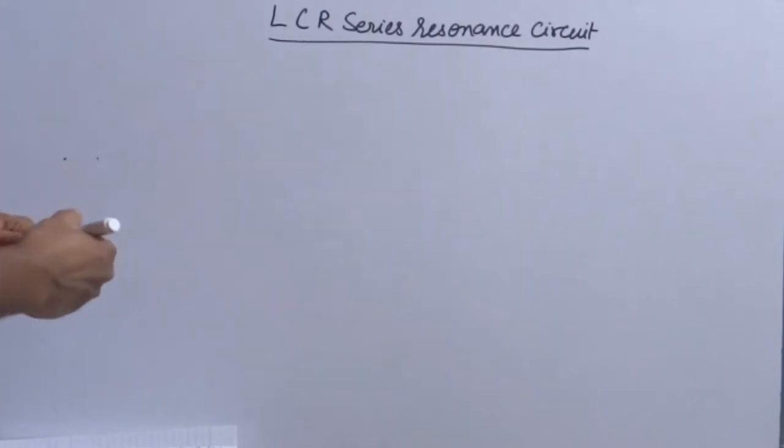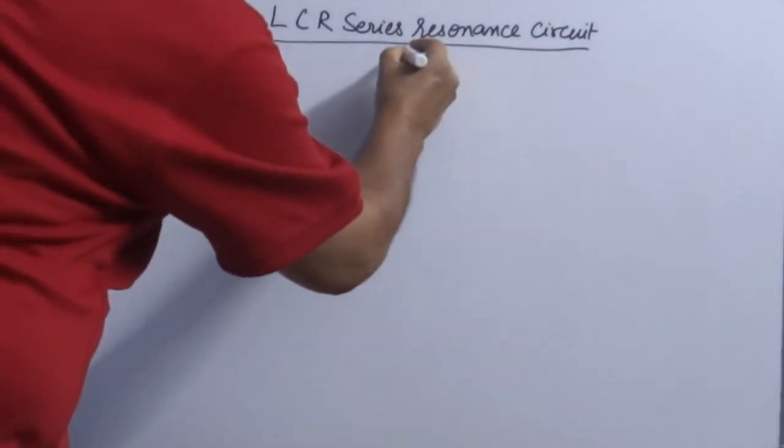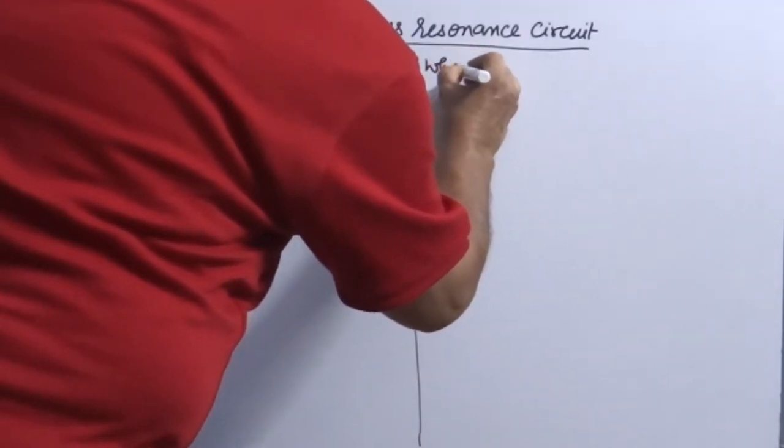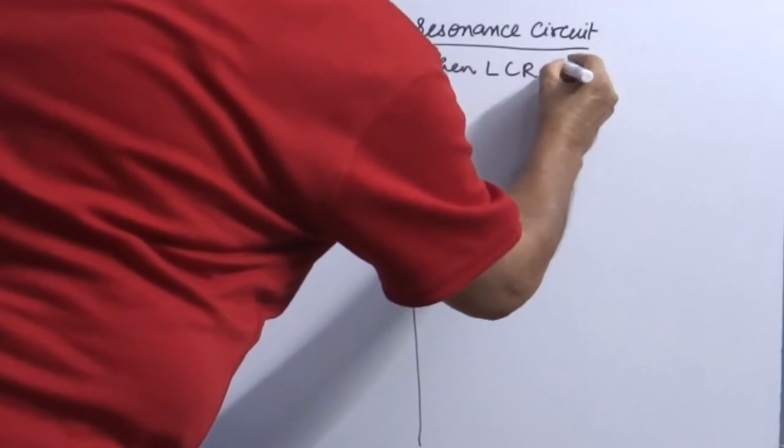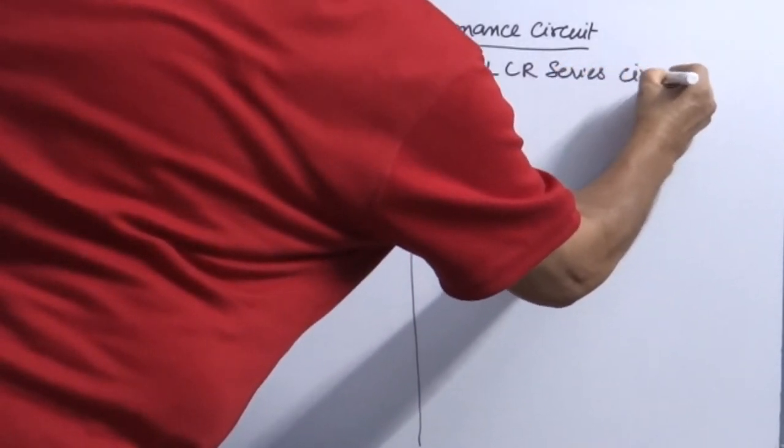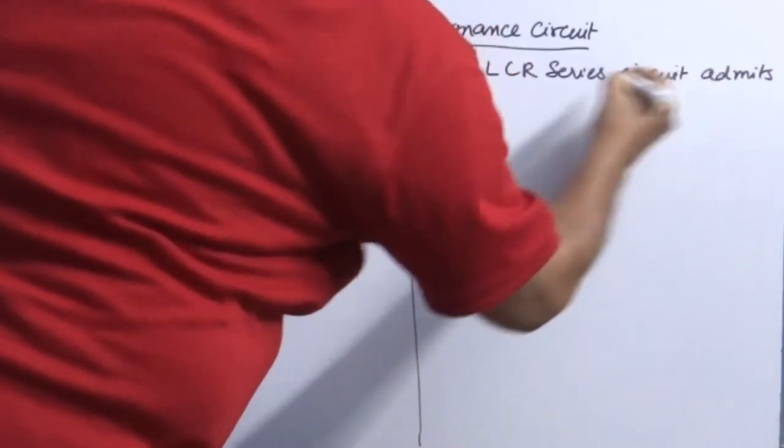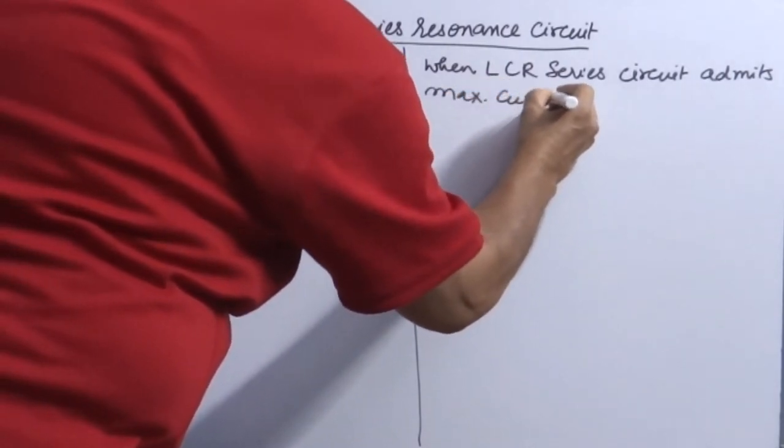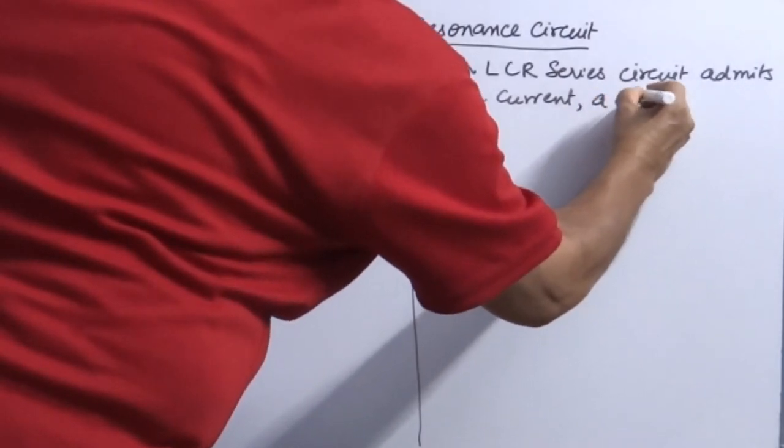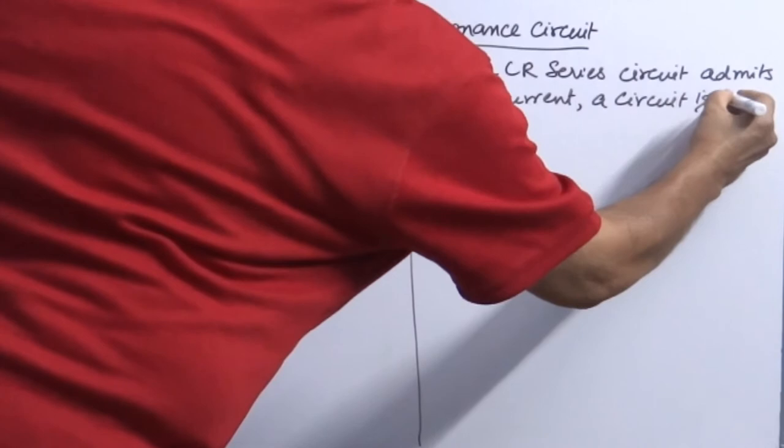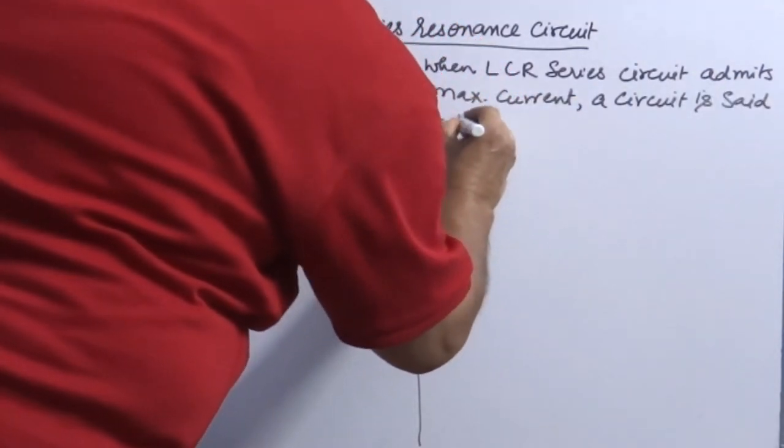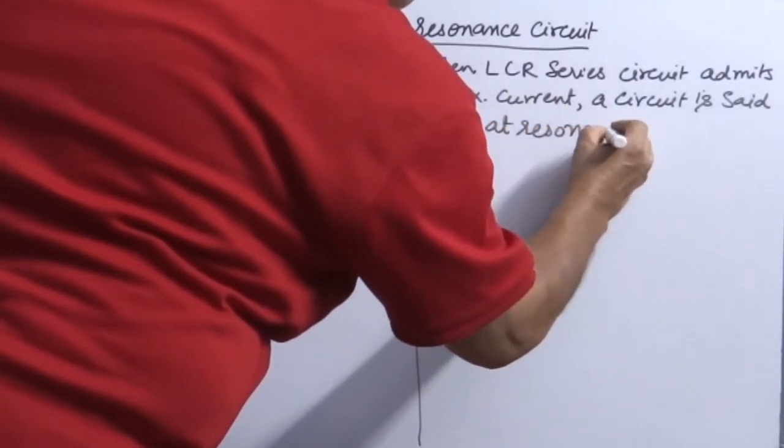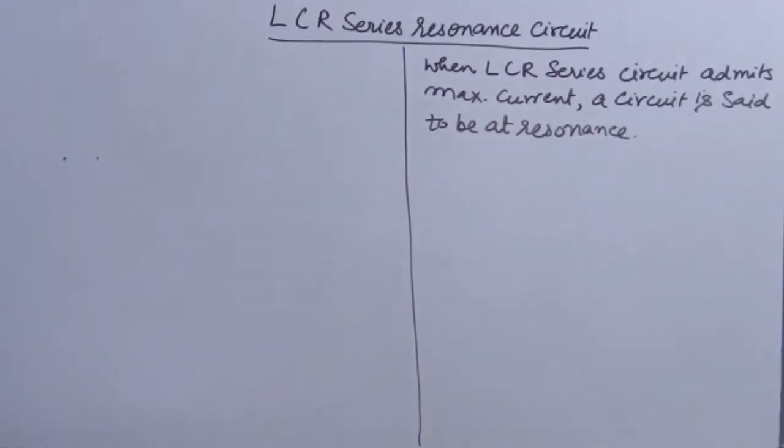Let's see LCR series resonance circuit. What is resonance? You know you have studied in 11th very well. Now what is LCR series resonance circuit? When LCR series circuit admits maximum current, a circuit is said to be at resonance.